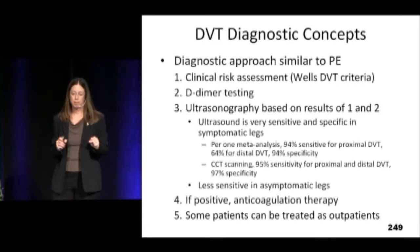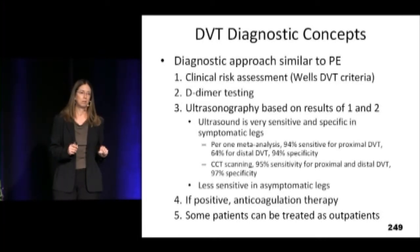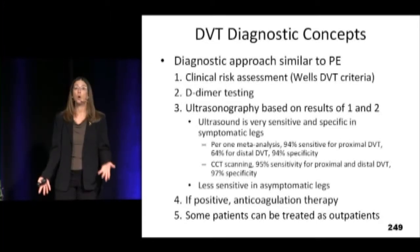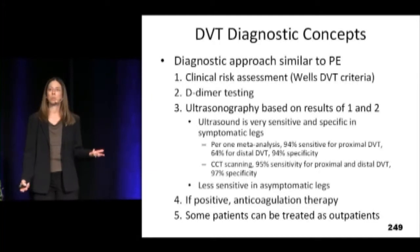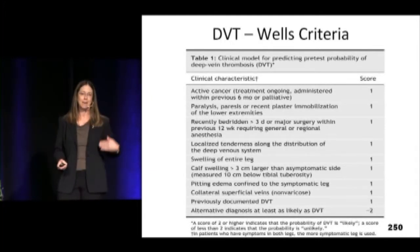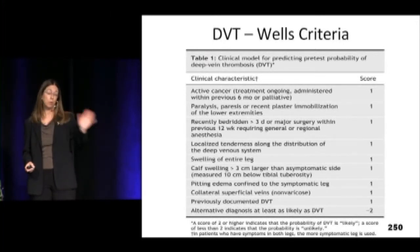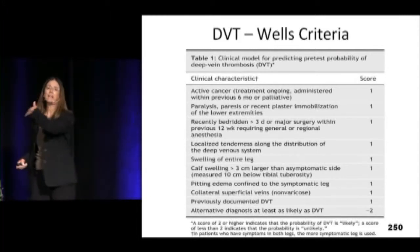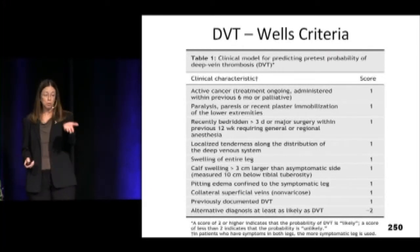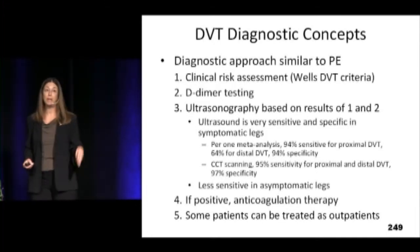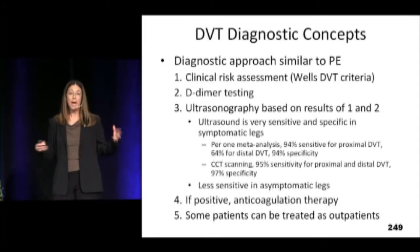What you need to do is the same thing you would do with pulmonary embolism — risk stratify first. Somebody with raging cellulitis and a slightly swollen ankle is probably just cellulitis, not DVT. Somebody with no evidence of cellulitis and a leg swollen from the groin down — that's much more suspicious. There's the Wells criteria for DVT. It's now simplified to likely or unlikely rather than low, intermediate, and high. If they are low risk, you're going to D-dimer. If it's negative, you're finished. Ultrasonography is the way to go — absolutely the way to go.